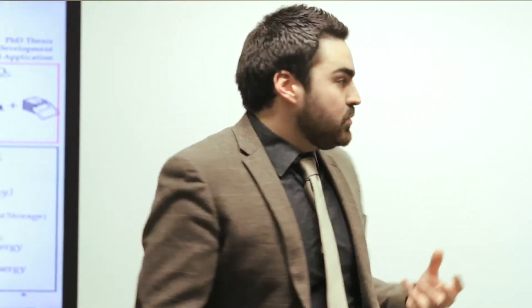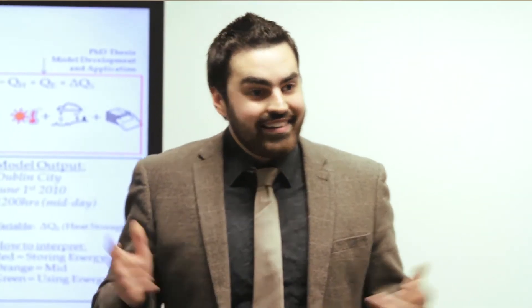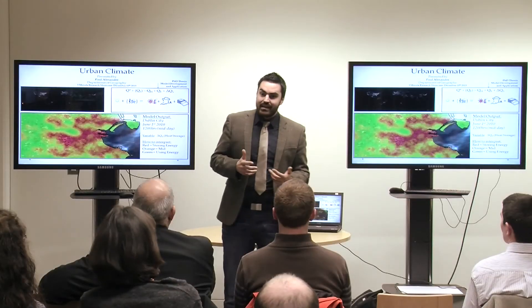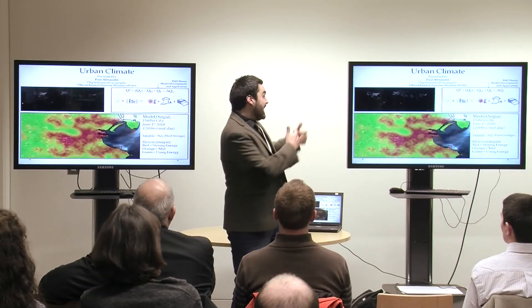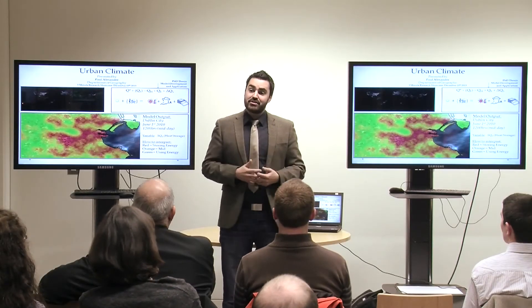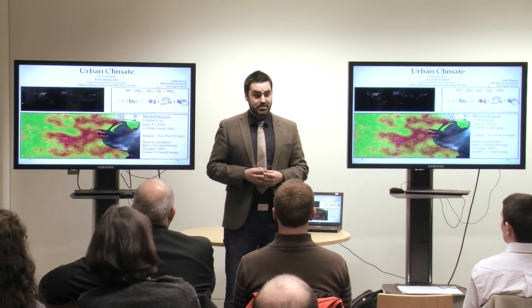My research is about building a model that will be able to simulate what happens to energy when it encounters an urban surface. The model asks two very simple questions: what's the nature of your landscape — how big are your buildings, how tall are your trees? Then it asks what's the nature of your energy — what's the weather like outside? Using a string of mathematical formulae, it's able to output or simulate what happens to energy when it encounters an urban surface.